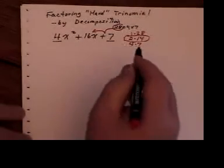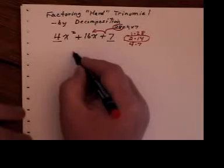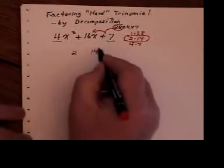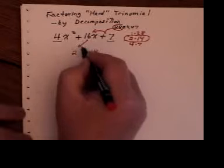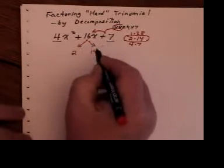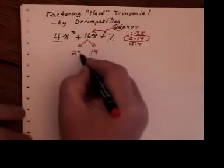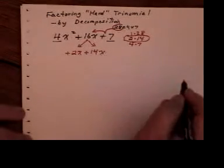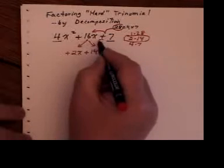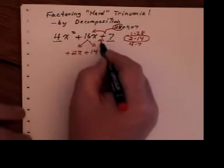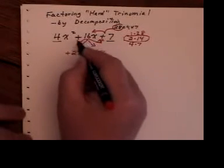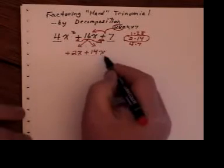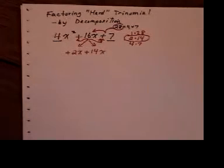What that tells you is when you write down 2 and 14, it tells you how the middle term was derived. It must have come from 2x plus 14x. I know both signs are going to be the same, and I know that they are both going to be the same as that guy. So, they're both going to be plus. So, the first thing you do is you break up 16x into where it came from.